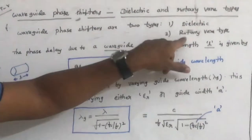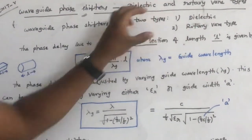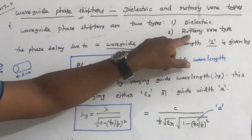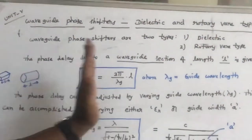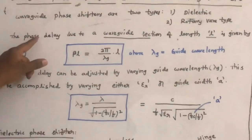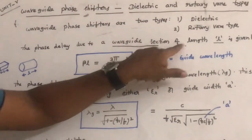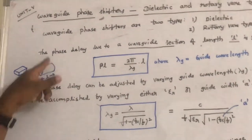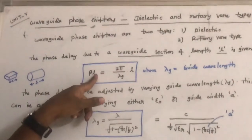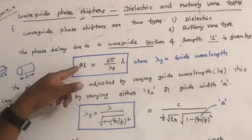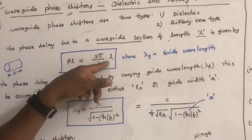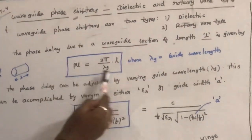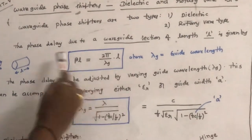What these dielectric and rotary vane type devices will do is that they provide a phase shift to the wave when it is travelling through it. The phase delay due to a waveguide section of length L is given by beta times L, where beta equals 2π/λG. So this is the phase shift provided by a waveguide of length L, where L is the length of the waveguide section and λG is the guide wavelength.